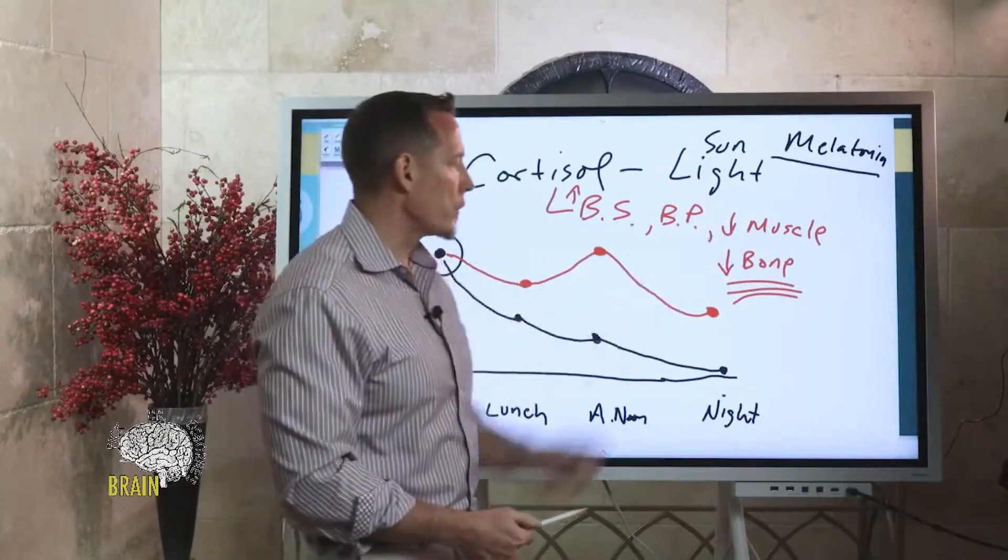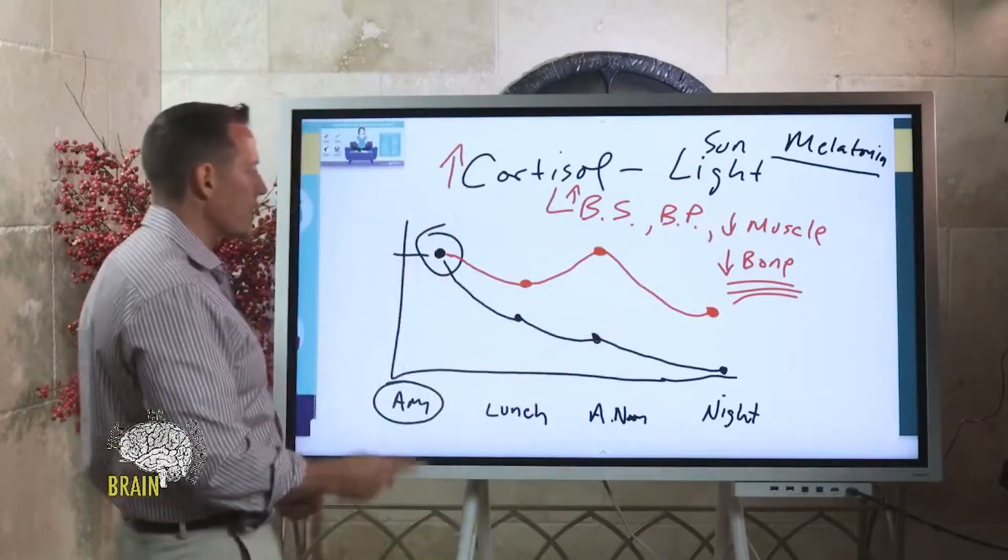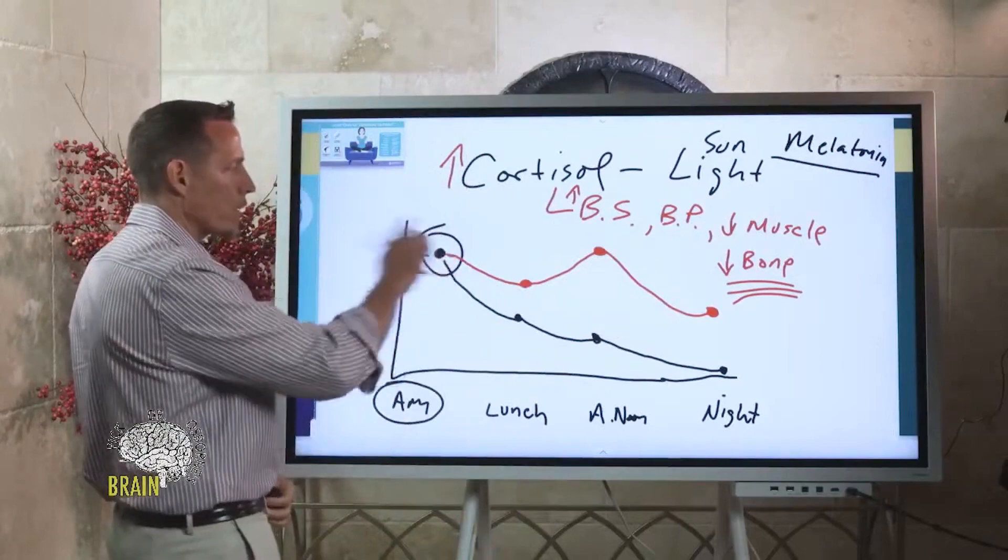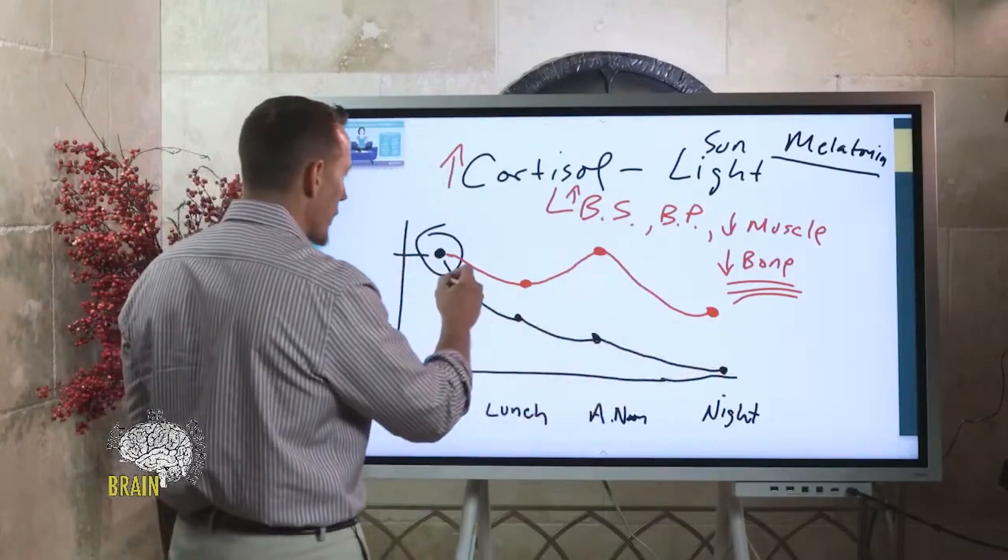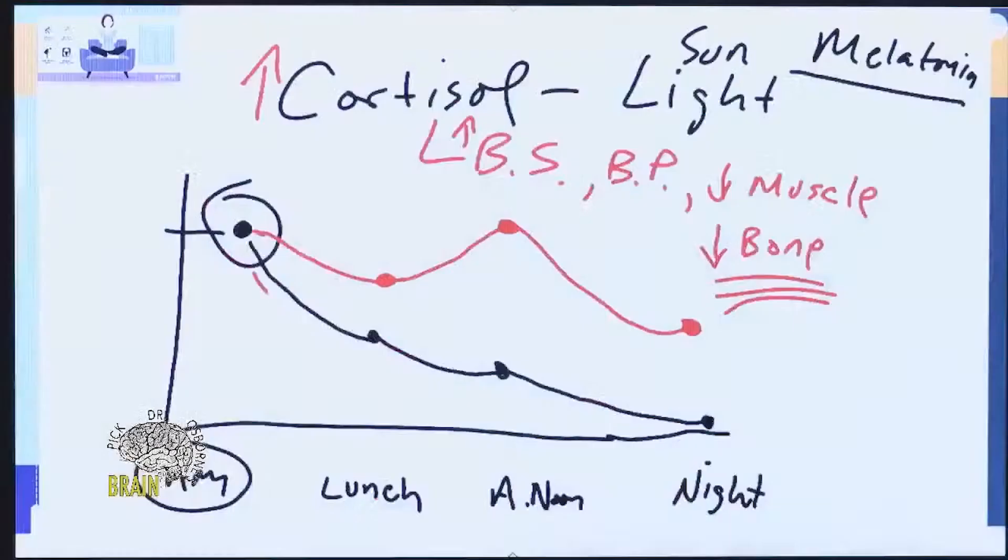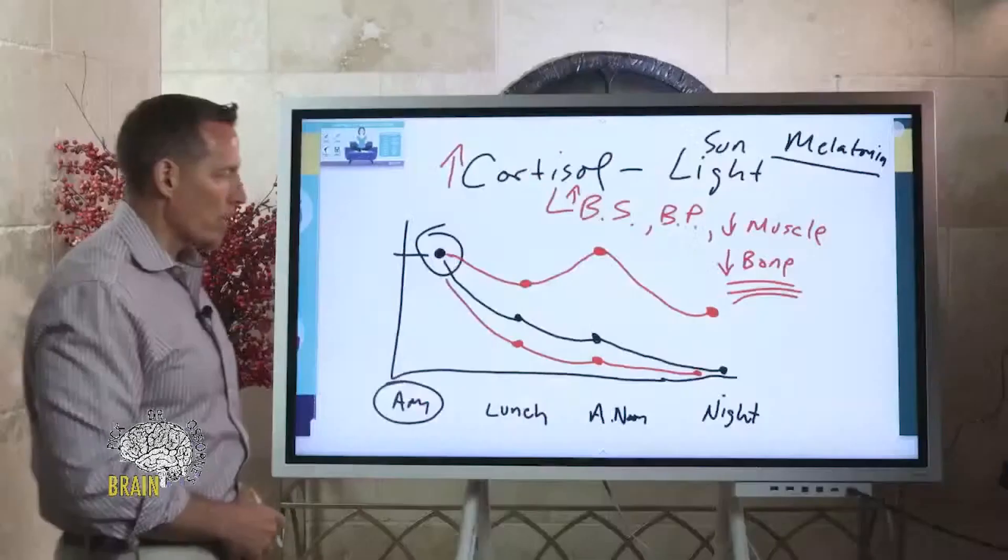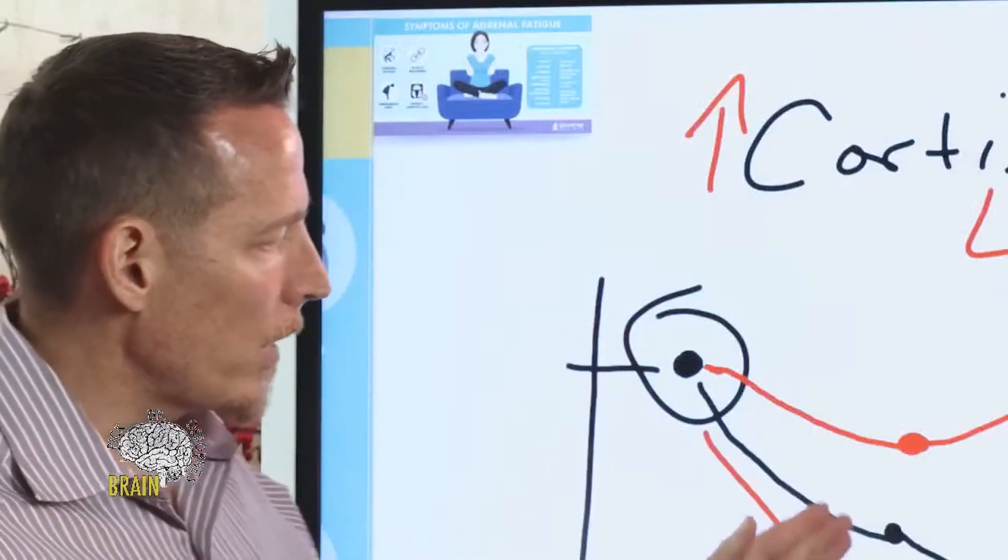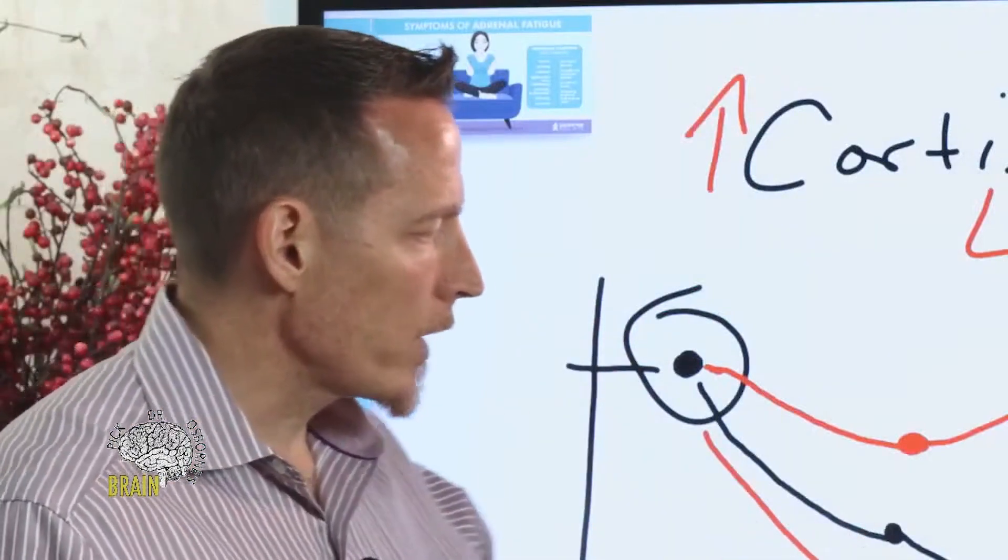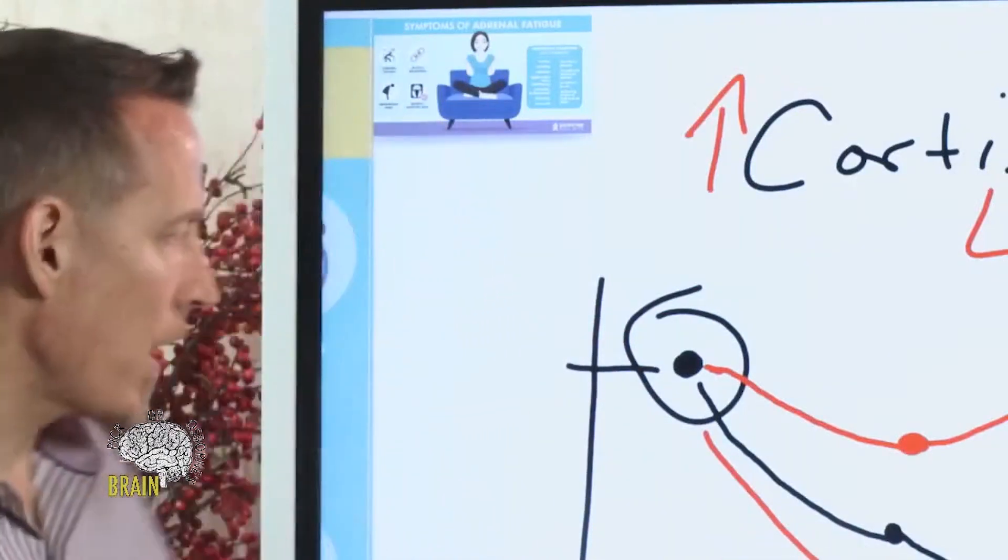Another pattern that we'll sometimes see is that cortisol will be normal in the morning and then it'll drop and it'll stay lower than what it should. This is a classic example of a person who is tired all the time. Maybe they wake up and they feel okay, but their cortisol drops to such a great degree over the course of the day they're tired all the time.